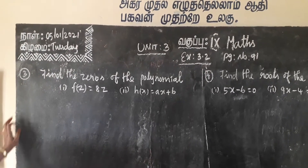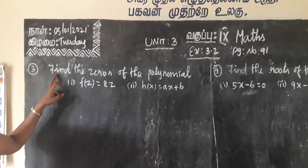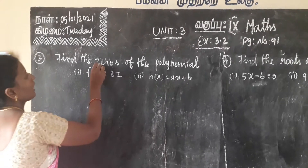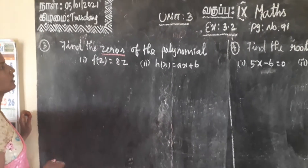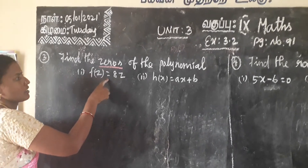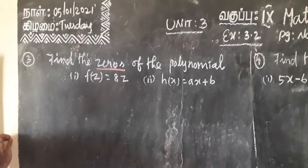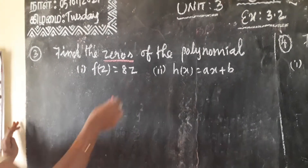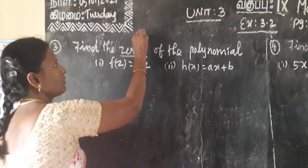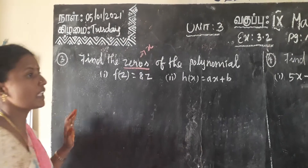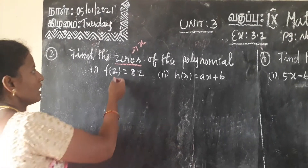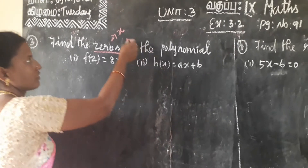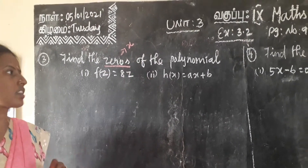Unit 3, find the zeros of the polynomial. Zeros of the polynomial means find the variable values. If the variable is z, we have to find out the z values; if it is x, we have to find out the x values. That is zeros of the polynomial.